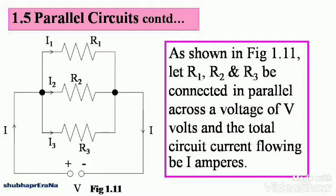Note down figure 1.11. As shown in figure 1.11, let R1, R2 and R3 be connected in parallel across a voltage of V volts and the total circuit current flowing be I amperes. You can see that the voltage is V, there is a positive and negative voltage V with current I and current gets split into I1, I2 and I3 at the junction of the three resistances R1, R2 and R3. When they are joined again, current becomes I once more. Note down this figure.